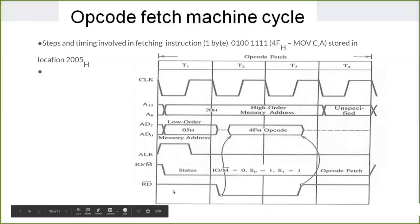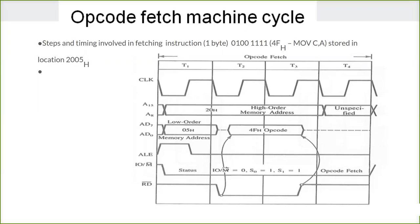Whether reading or writing is done is indicated by the RD-bar signal. It is active low, so when it is high nothing is being read, but when it goes low it indicates that it is reading. Together with IO/M-bar it tells whether it is reading or writing from memory or from an I/O device. There is only one read signal, but combined with IO/M-bar it distinguishes between reading from main memory or an I/O device.